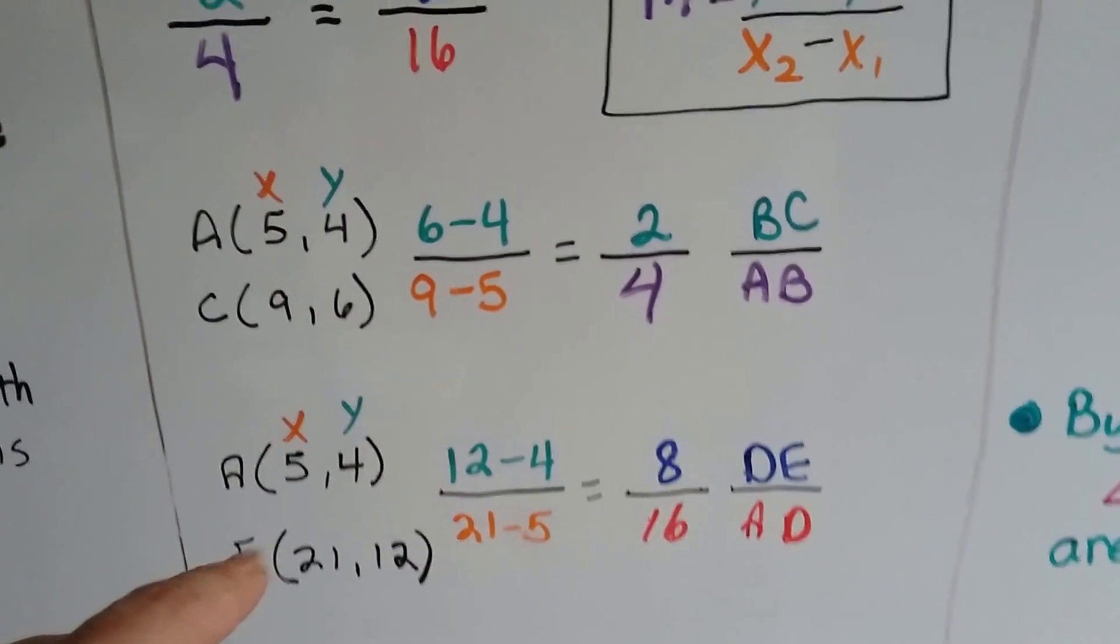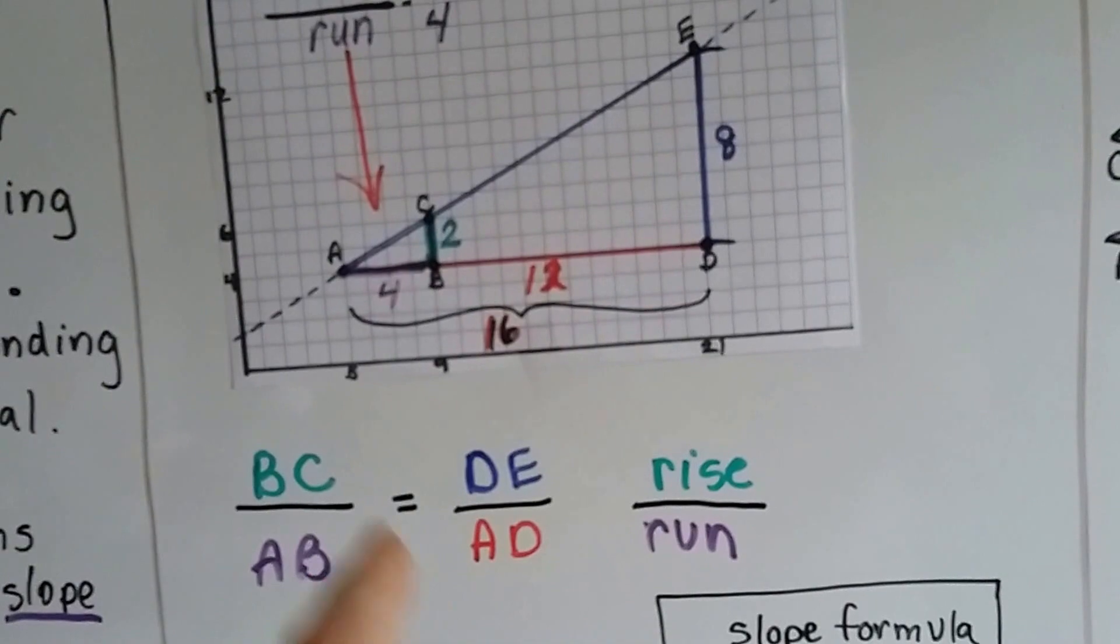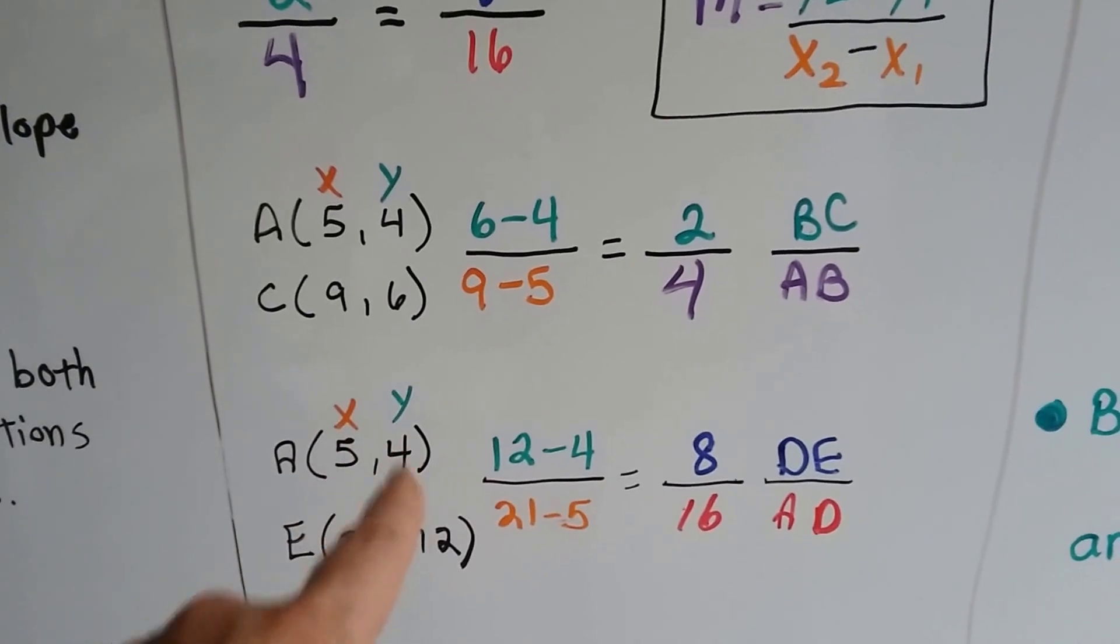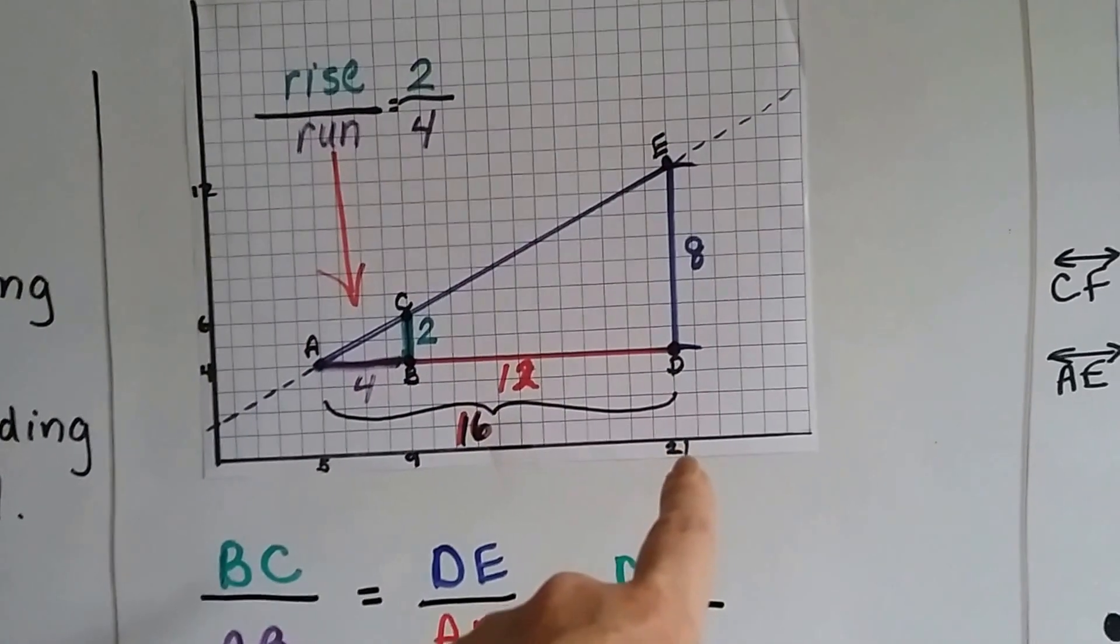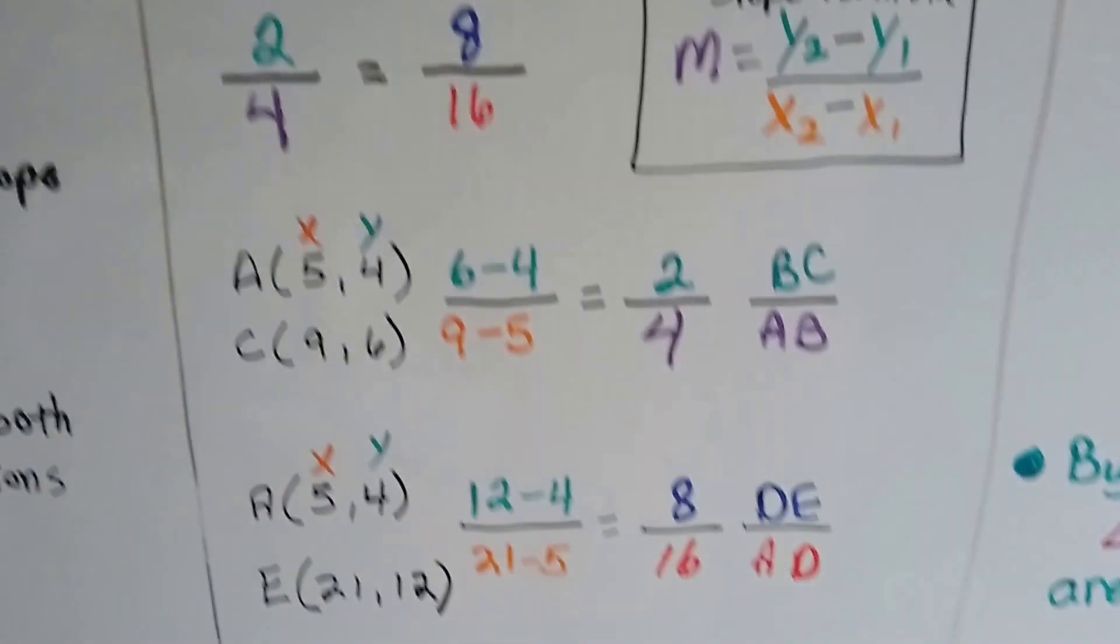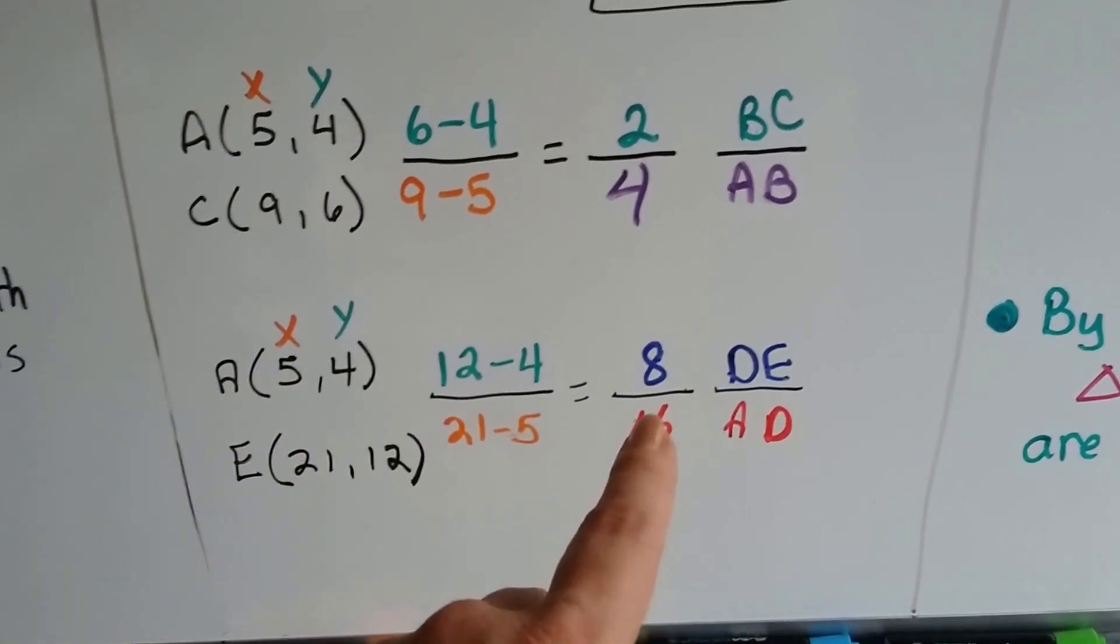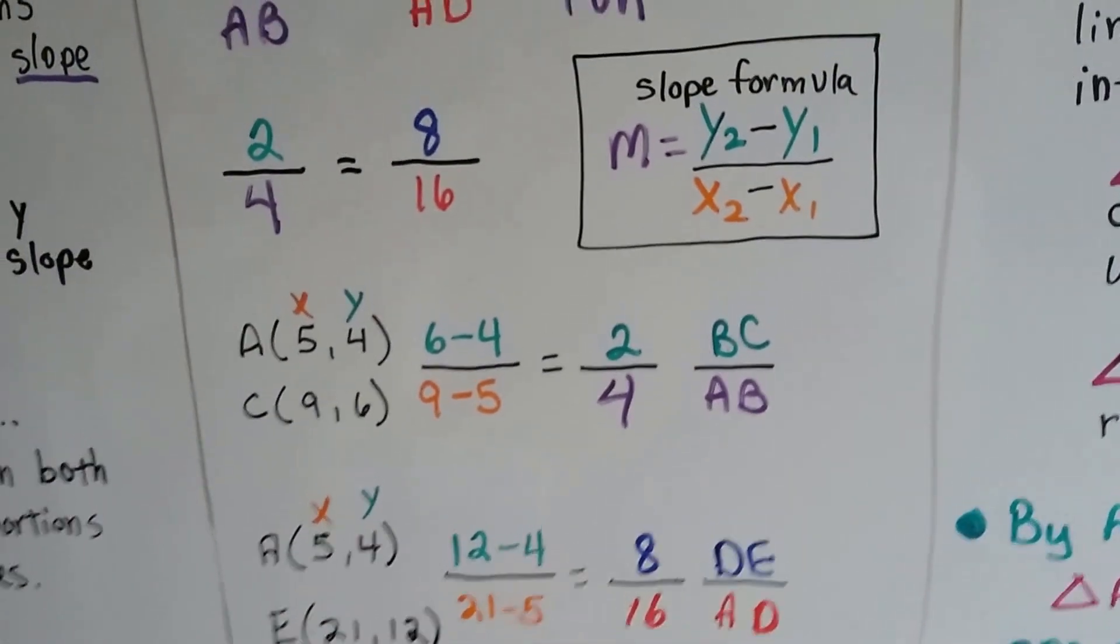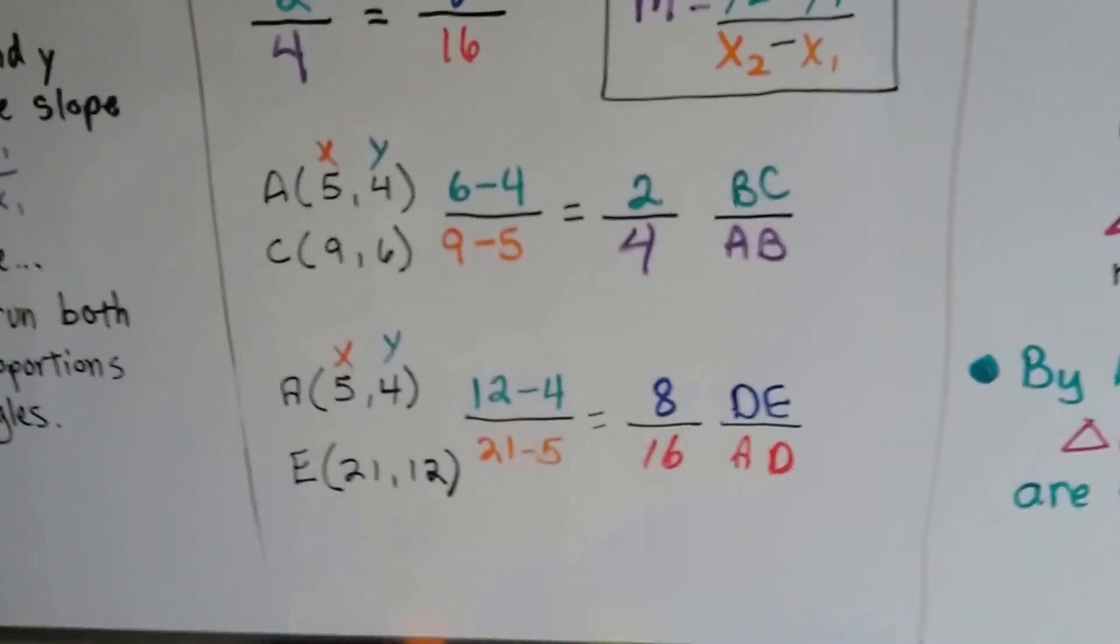We can do it for AE also. That would be A and E. A is at 5 and 4, so we write that down. The x is 5, the y is 4, and E, the x is 21, and the y is 12. So now we're going to have 12 take away 4, that's an 8, and 21 take away 5, that's 16. That gives us 8 over 16. So DE over AD is 8 over 16.